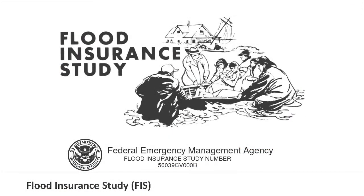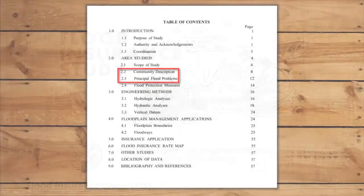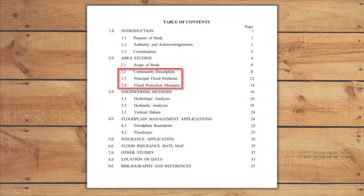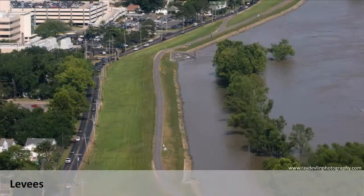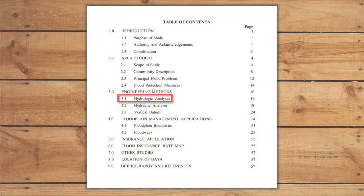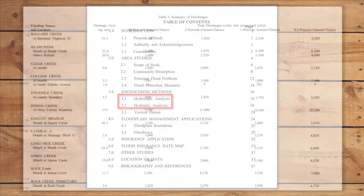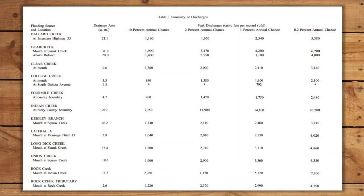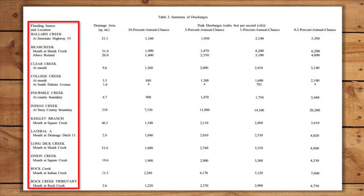The Flood Insurance Study text contains additional information for the community, such as a description of the community and its principal flood problems. It will also include a description of any flood protection measures, such as levees or dams, that exist in the community, a description of the hydrologic and hydraulic methods used to conduct the detailed study, and a table listing the flow frequency analysis for those streams for which a detailed study was performed.